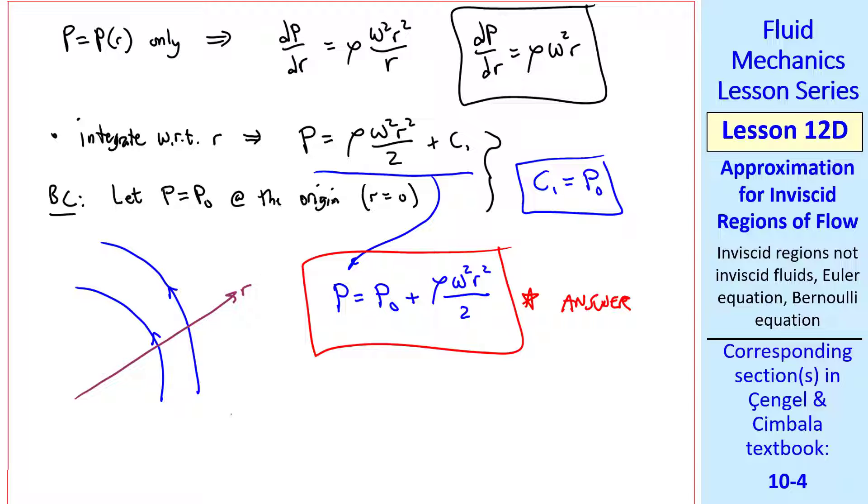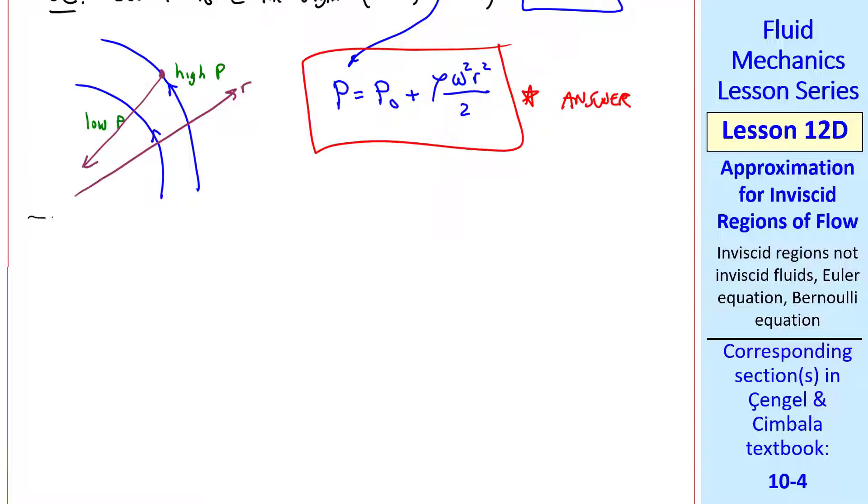A quick comment here, as we increase r, we can see that p increases because of this term. So there's a higher pressure here than here. That makes sense because for a curved flow like this, there must be a centripetal acceleration towards the middle, that is, towards the center of curvature. The pressure difference, or the pressure gradient, is what causes this centripetal acceleration.